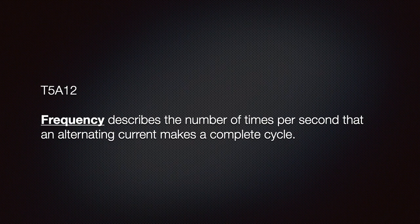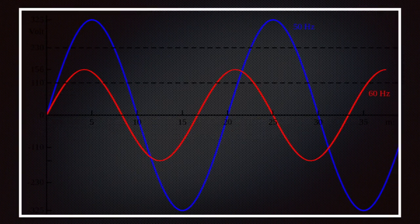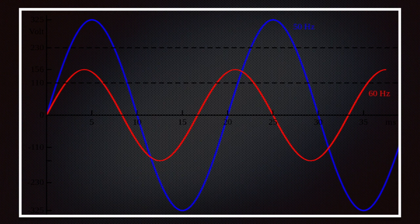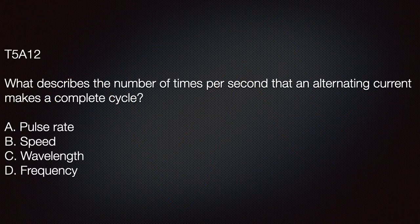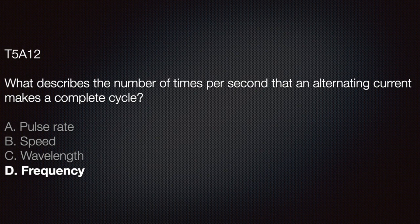Frequency describes the number of times per second that alternating current makes a complete cycle. In this slide we can compare 50 hertz or cycles per second to 60. We can clearly see that 60 is faster or completes more cycles per second. The corresponding test question is this. What describes the number of times per second that an alternating current makes a complete cycle? A, pulse rate. B, speed. C, wavelength. D, frequency. The correct answer is D, frequency.